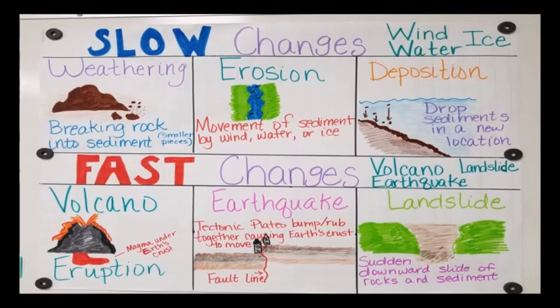Some changes take place very quickly and some take place after a long period of time — these are fast changes and slow changes. The duration of bursting a balloon is shorter than the ripening of a fruit. Changes that take place in a short period of time are called quick changes. Events like volcanic eruption, earthquake, and landslide all take place very fast and are called quick changes. When a change takes place after a very long period of time, it is called a slow change.